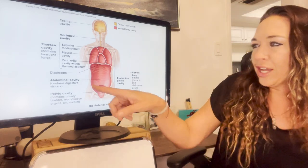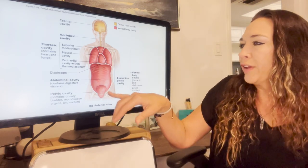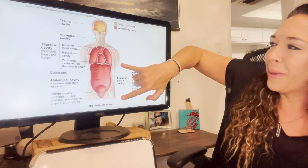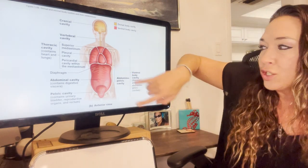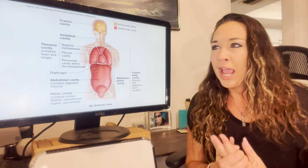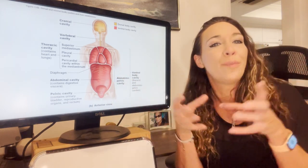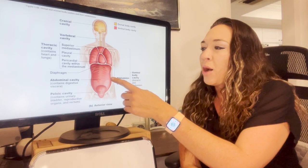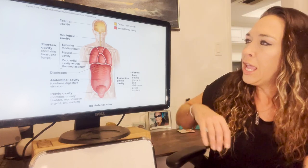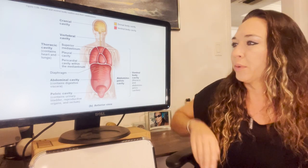This includes things like your digestive viscera — basically everything for your digestive system — your pelvic cavity with your urinary system. This is known as your abdominal pelvic cavity because it contains both your abdomen and your pelvic region. In anatomy we often combine words when we're talking about both regions together. The ventral body cavity includes all three: thoracic, abdomen, and pelvic.